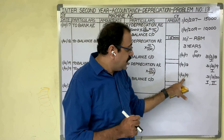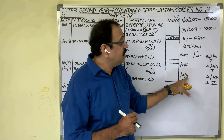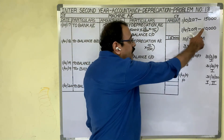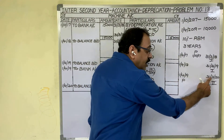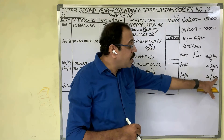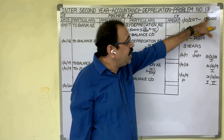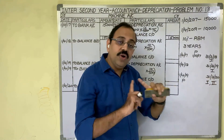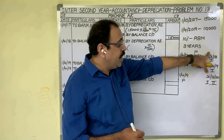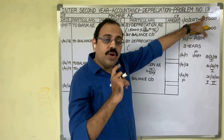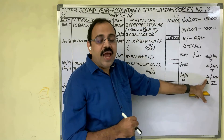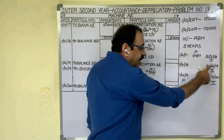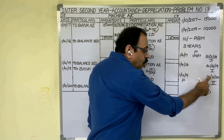In the third year, on 1st April 2019 the firm purchased an additional machine for 10,000 rupees — on the starting date of the year. So in Year 3, that 10,000-rupee asset is used from 1st April 2019 to 31st March 2020, a full year. On 31st March 2020 the firm has two assets: the 15,000-rupee asset and the 10,000-rupee asset, both used for the full year. The three years are 2017–18, 2018–19, and 2019–20.